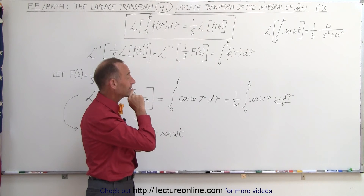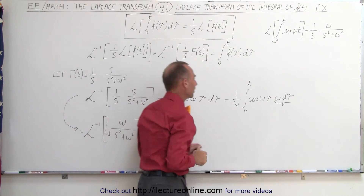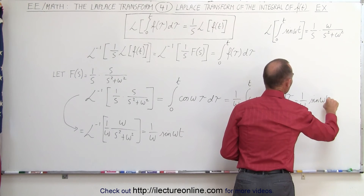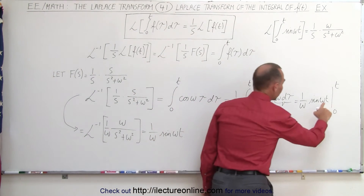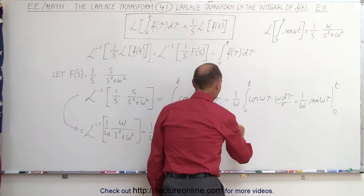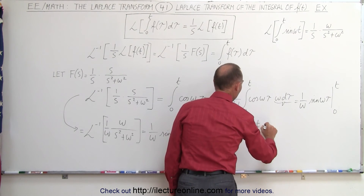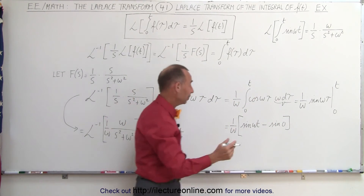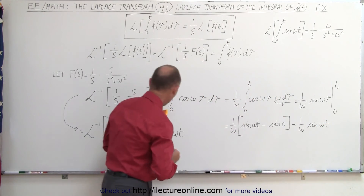The integral of the cosine is the positive sine — the derivative of sine is cosine, so the integral of cosine is sine. This gives us 1 over omega times the sine of omega tau, evaluated from 0 to t. Plugging in the upper limit gives sine of omega t, and plugging in the lower limit gives sine of 0, which is 0. So this becomes 1 over omega times the sine of omega t, which is exactly the same result we got before.